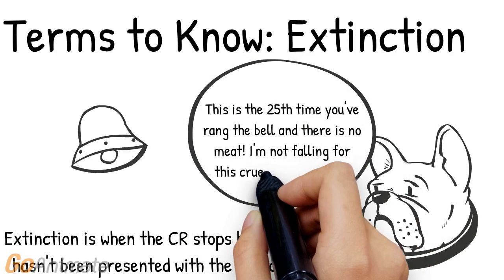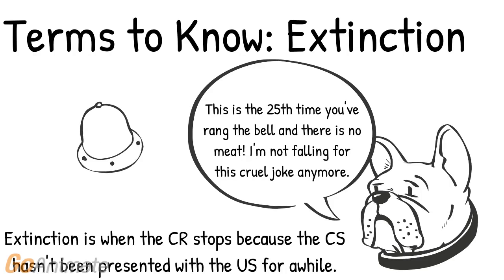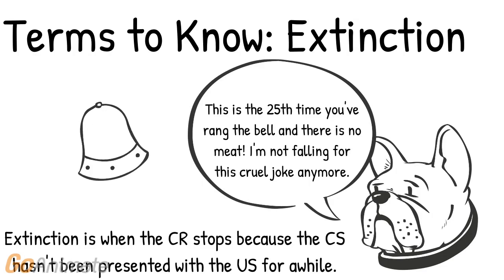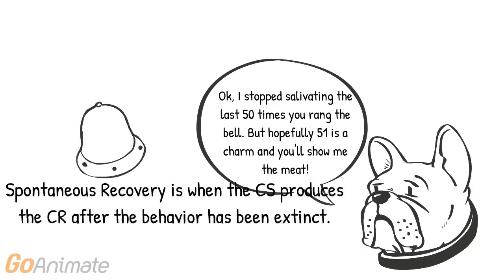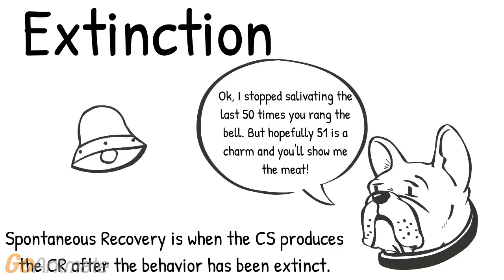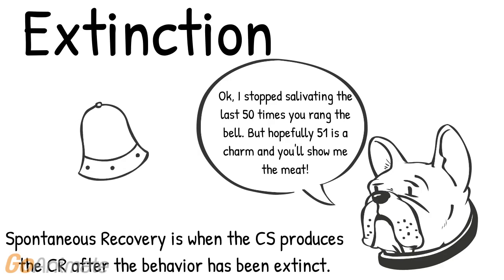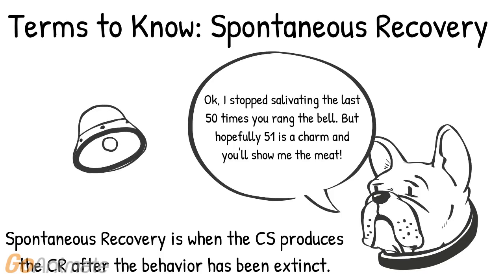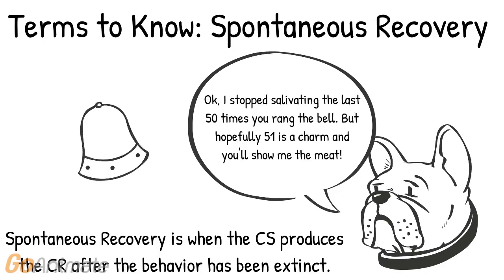It makes sense that if you ring the bell and don't show the dog the meat, the dog is going to stop associating the bell with the meat — and that's what extinction is. Extinction is when the conditioned response stops because the conditioned stimulus hasn't been presented with the unconditioned stimulus for a while. But let's say the dog forgets to salivate to the bell 30 times in a row, and on the 31st time the dog salivates to the bell — this is called spontaneous recovery. Spontaneous recovery is when the conditioned stimulus produces the conditioned response after the conditioned response had previously stopped.